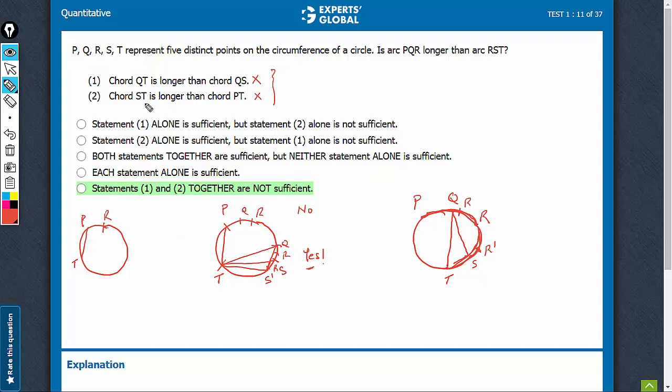We meet the first condition by having PT really small so that ST could be bigger. For the second condition, we want QT longer than QS, so let's have Q somewhere here. QT is big and we want QS smaller, so let's have S very close here. Now PQR is very small while RST is really big. So we've got no as an answer while both conditions are being met.